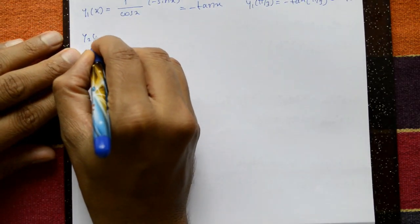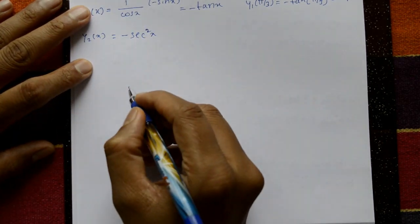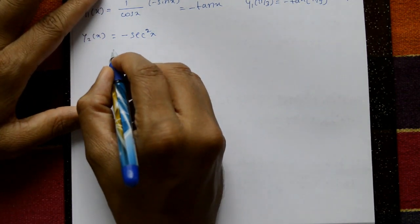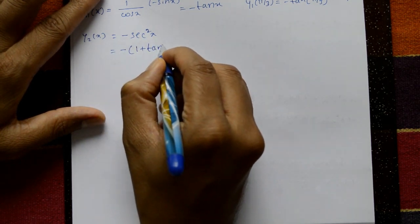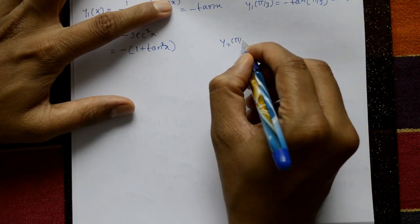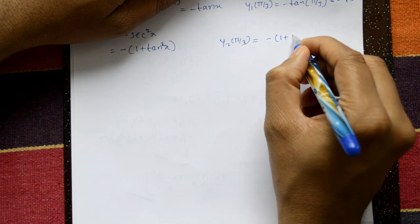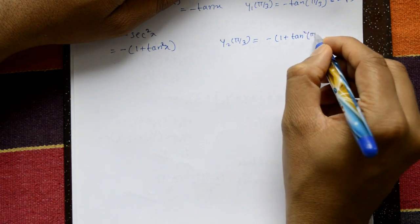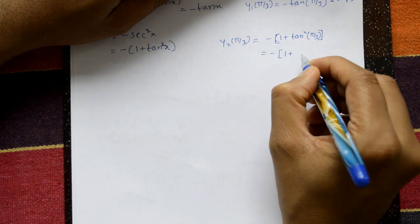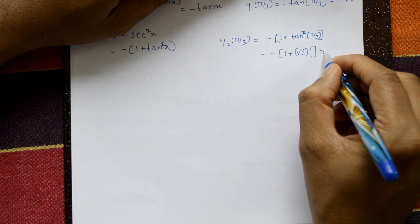Next, y₂(x): differentiating −tan x gives −sec²x = −(1 + tan²x). Substituting x = π/3: y₂(π/3) = −(1 + tan²(π/3)) = −(1 + (√3)²) = −(1 + 3) = −4.